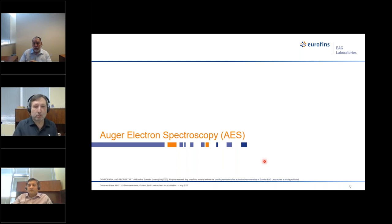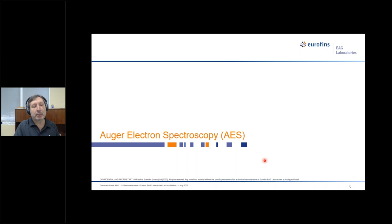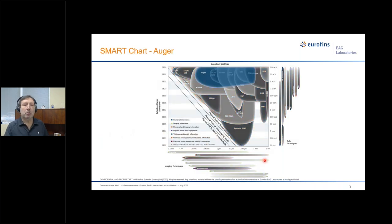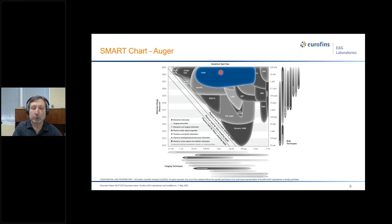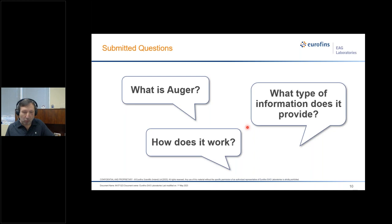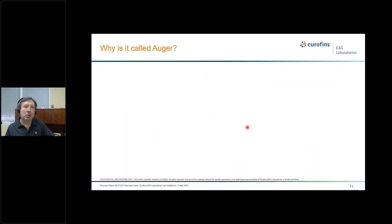Thanks, Lori. Over the next 10 to 15 minutes, I will try to address some questions about Auger. But first, looking at the bubble chart, Auger covers spot size ranges from 10 nanometers to about a millimeter and a concentration range from below one atomic percent to 100 percent. Many of the questions were of a very general nature — like what is Auger, how does it work, and what can it do?